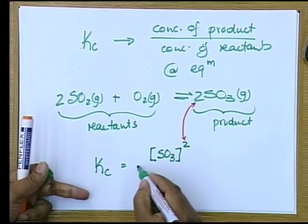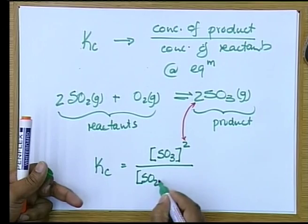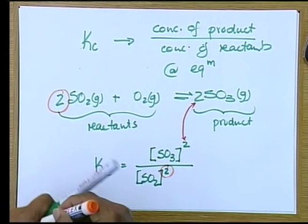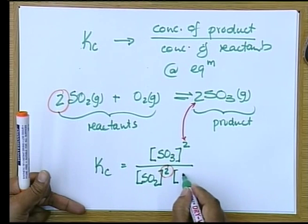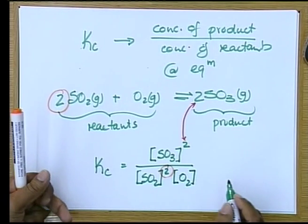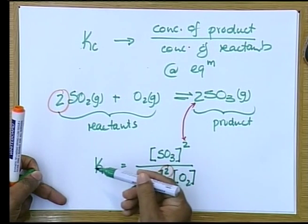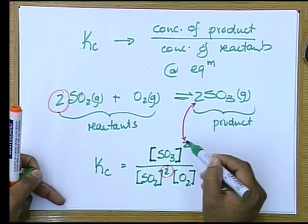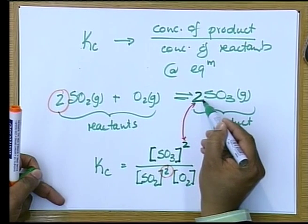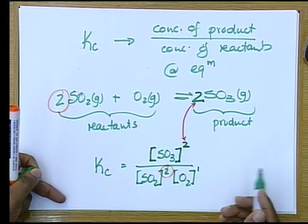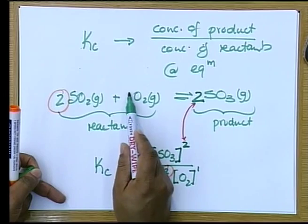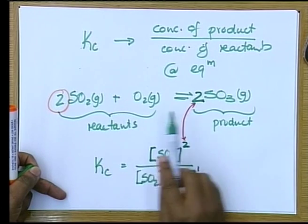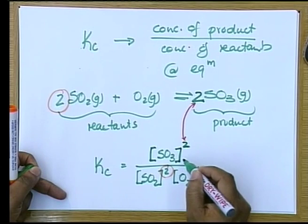We divide that by the concentration of sulfur dioxide to the power 2. The 2 goes with the 2 in front of sulfur dioxide. And finally, it must be multiplied with the concentration of oxygen. The square bracket indicates concentration, and it is raised to the power equal to the coefficient. Oxygen is to the power 1. The first important thing is that your equation must be balanced in order to write a correct expression for Kc.